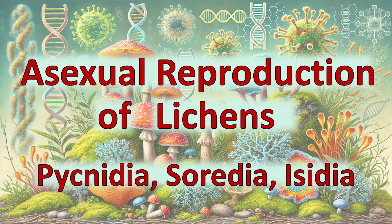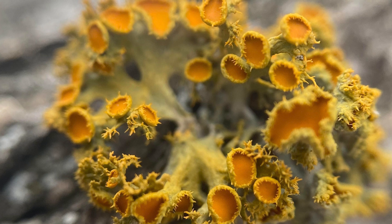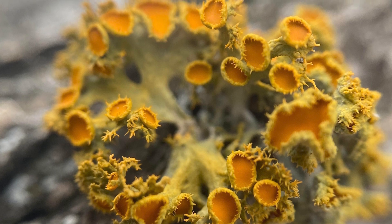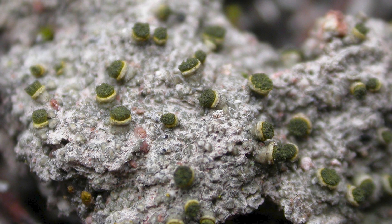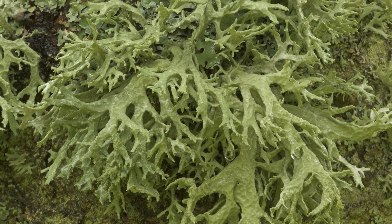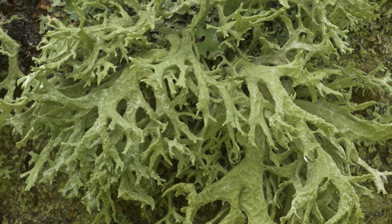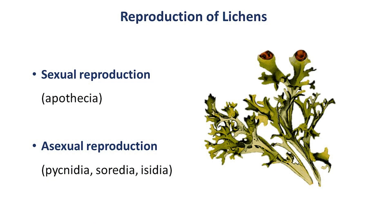Hello Fungis, and welcome to the first channel about fungi. Today I'm going to talk about a highly fascinating topic: asexual reproduction of lichens. Lichens are unique organisms formed from a symbiotic relationship between fungi and photosynthetic partners such as green algae or cyanobacteria, functioning as a single biological unit. The biology of lichens enables them to reproduce both sexually and asexually.